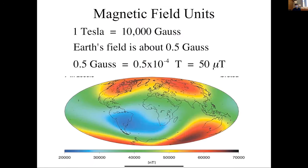In MRI there are two main units for magnetic field strength. We use Tesla for very large fields and Gauss for smaller fields. In the US both Tesla and Gauss are used; in Europe they tend to use Tesla and millitesla (SI units). Most clinical magnets are on the order of a Tesla, and one Tesla equals 10,000 Gauss.